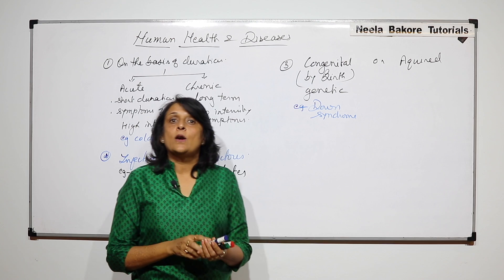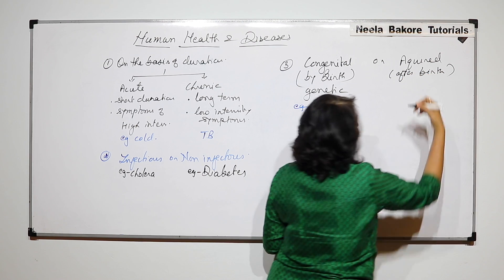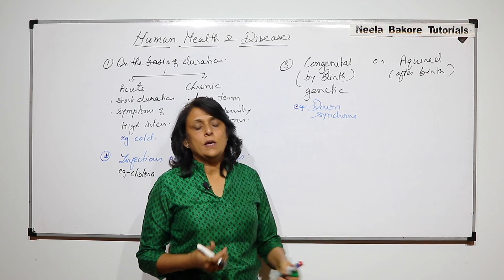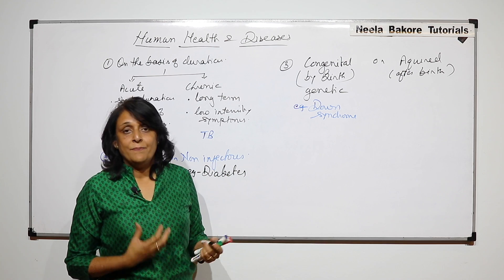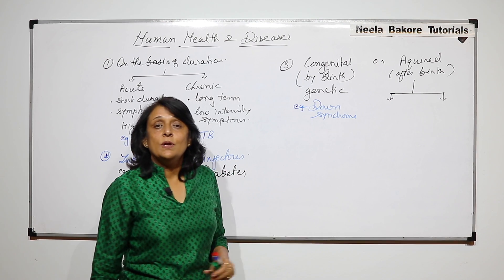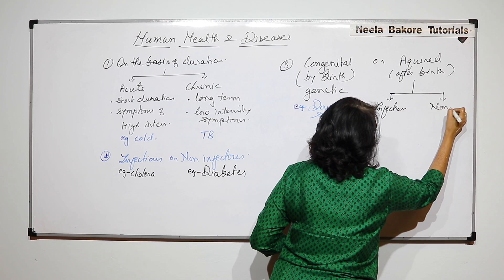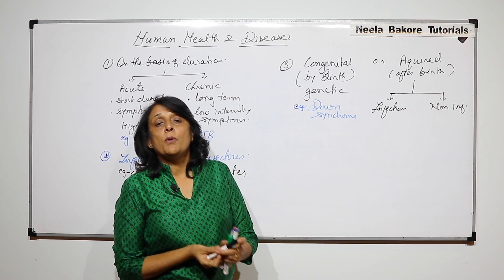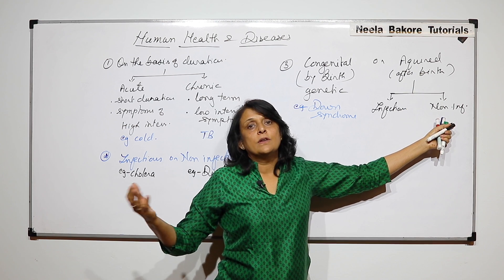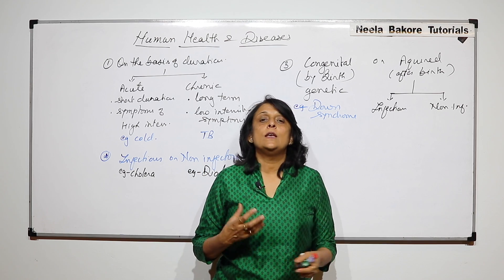Acquired is a disease which you get after you are born. After birth, diseases like malaria, jaundice — whenever we encounter the pathogen, we get those diseases. Acquired diseases can again be classified into communicable and non-communicable, which is again infectious and non-infectious. For example, if after birth a person gets cholera, that is an acquired infectious disease; if a person develops diabetes, that is acquired non-infectious.